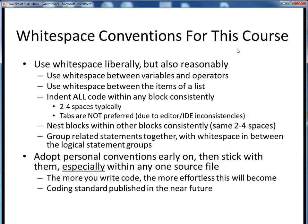To encourage code clarity, here are the whitespace coding conventions for this course. In a nutshell: use whitespace, but use it reasonably. Put some whitespace between all variables and operators, and between the items of any list. Indent all code inside any block by a consistent two to four spaces everywhere — note that tabs are not preferred because various editors or IDEs can handle them differently. Make sure you also nest blocks inside other blocks consistently using the same two-to-four space indents. Try and group related statements together with whitespace between logical groupings, and adopt personal conventions early on and stick with them.